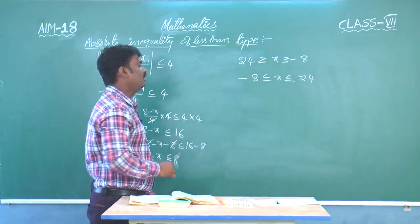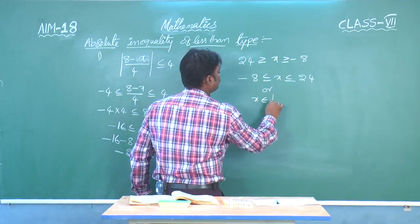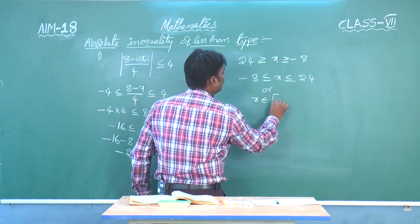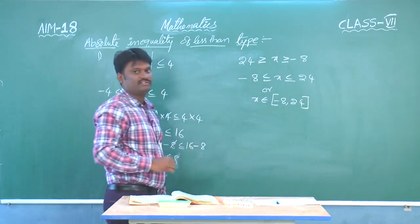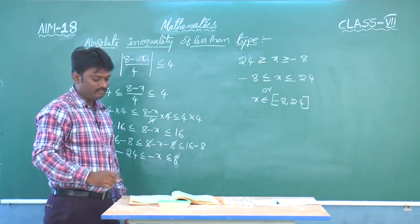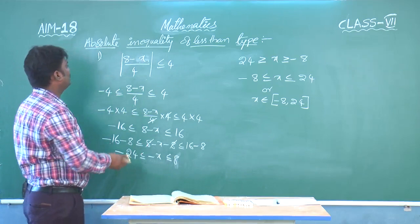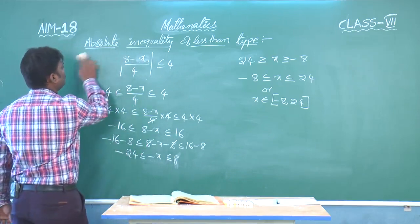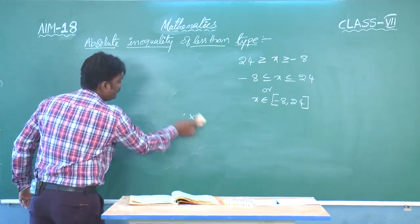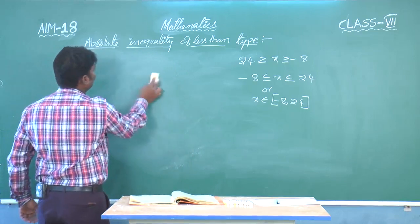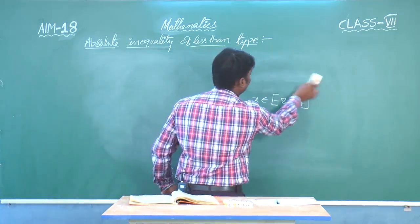We can write this as minus 8 less than or equal to x less than or equal to 24, or x belongs to the closed interval minus 8 comma 24. Now let us see the absolute inequality of greater than type.